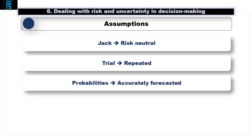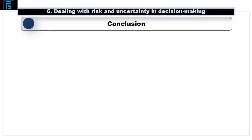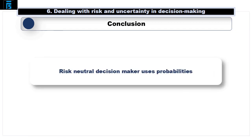It assumes Jack has accurately forecast the probabilities for this risky variable — off-the-street demand. And it assumes that if we turn customers away without selling them a sandwich, they'll try again another day, and we haven't damaged goodwill — in other words, that the risky variable stays the same each time. In conclusion, when dealing with risk, we can undertake calculations based on the balance of probabilities if we are risk-neutral.